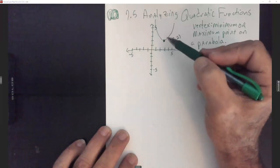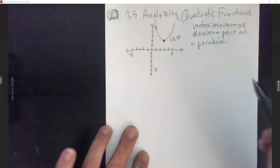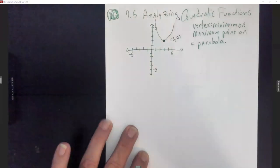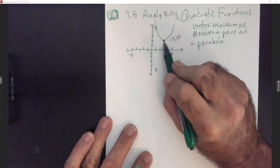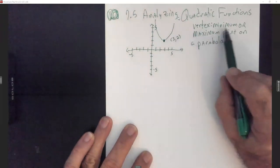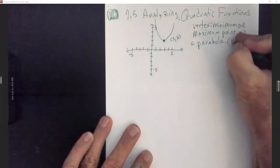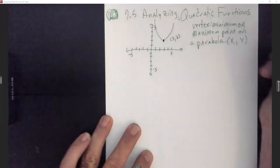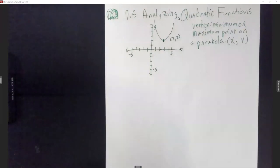I drew a parabola over here, but it's not symmetric to the y-axis when it's shifted over like this. I started out with this lowest point being what I call the vertex. It's the minimum or maximum point on the parabola. It always comes in the form of an x and a y — so when you talk about the vertex, it's an ordered pair.